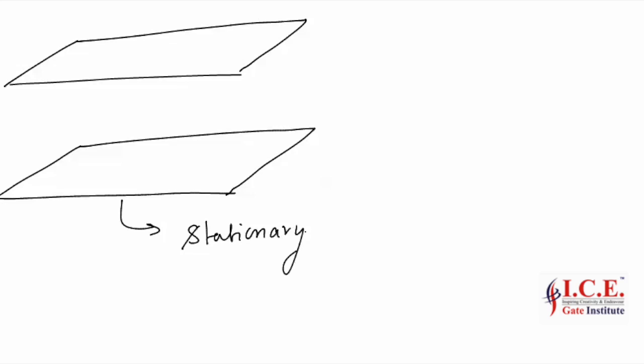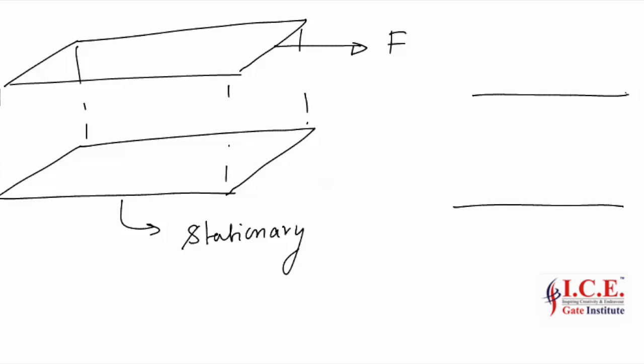Let us understand what viscosity means. Consider two parallel plates — if shown in 3D they look like this — with fluid sandwiched in between. The bottom plate is stationary and the top plate is being pulled by a force F. Because of force F, there will be a certain velocity V of the top plate.